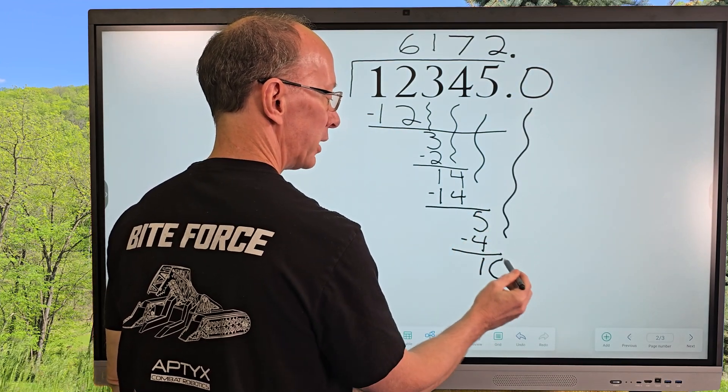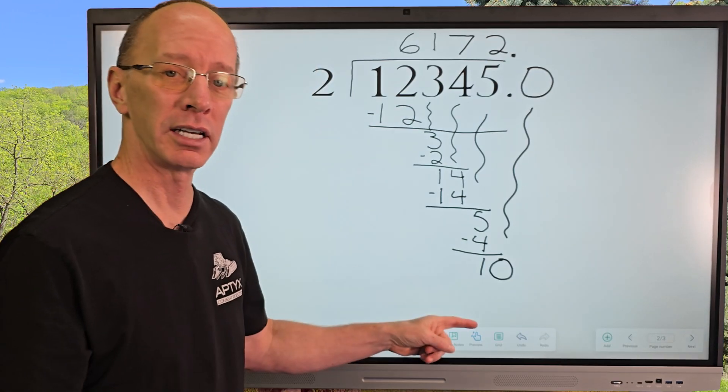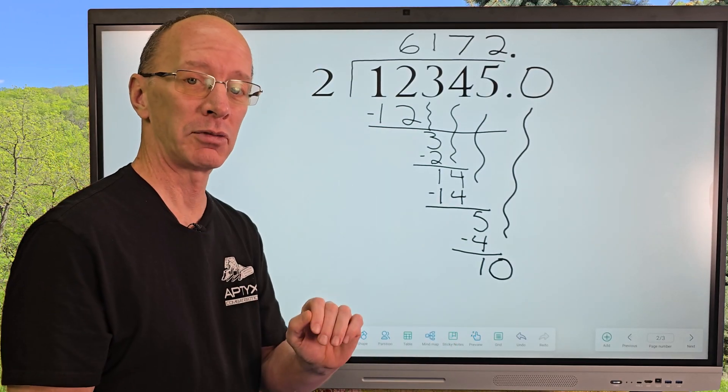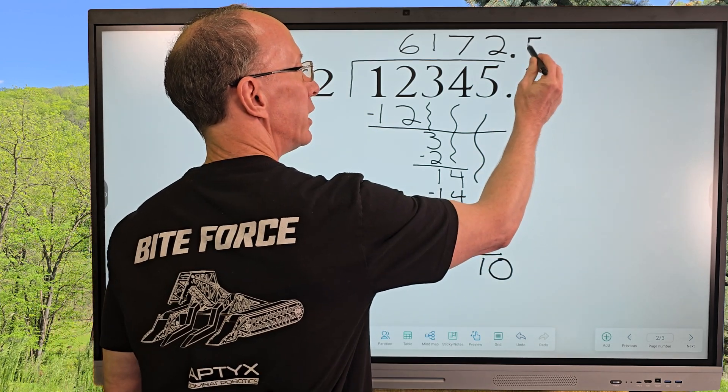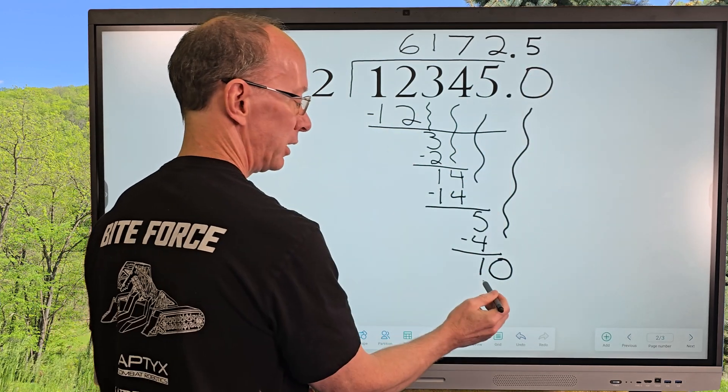Now how many times does 2 go into 10? 5 times. 2 times 5 equals 10. So I go ahead and put a 5 right here, and then 5 times 2 equals 10.